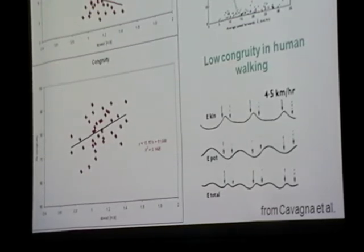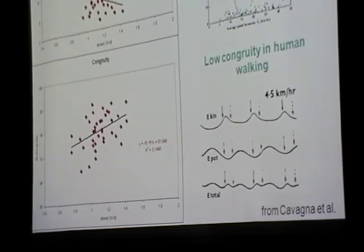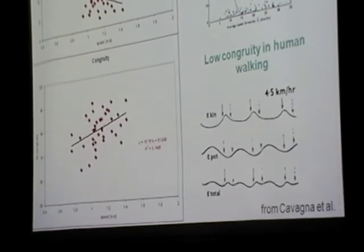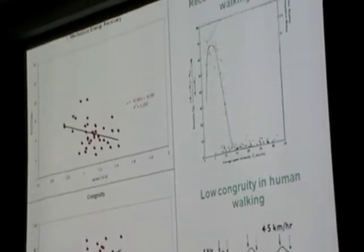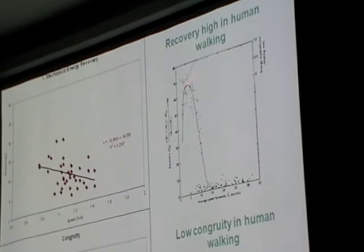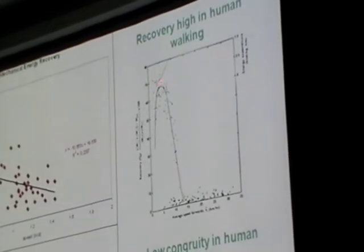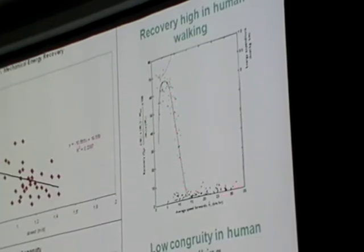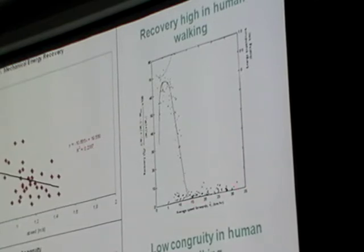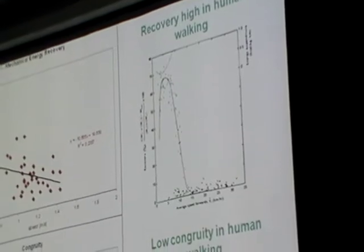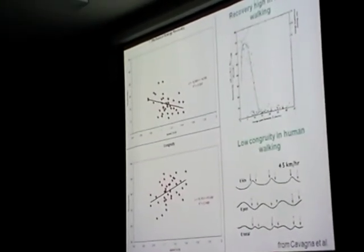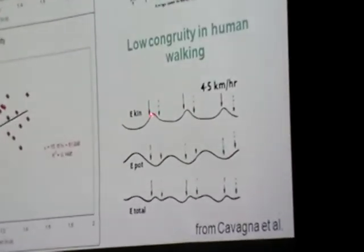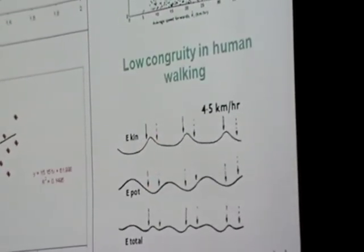From my work and other researchers, we know that during human walking, especially at intermediate speeds, we have very high recovery rates. There's a very high exchange between potential and kinetic energy, up to 65, almost 70% here. As we start walking faster and approach running speeds, that recovery rate drops dramatically. That has to do with the fact that the potential kinetic energy fluctuates in phase. But during intermediate walking speeds, you see that the potential energy peaks as the kinetic energy is at a minimum and vice versa, so very low congruency in human walking.